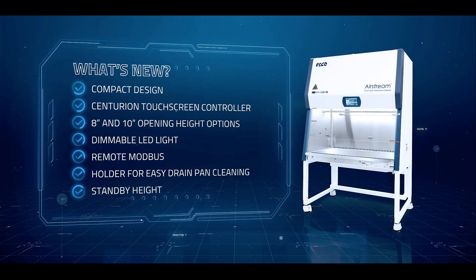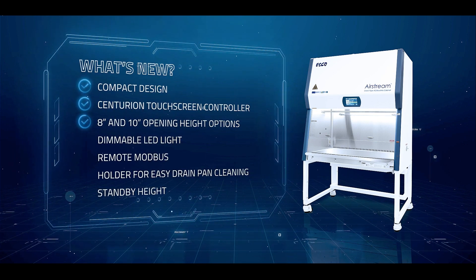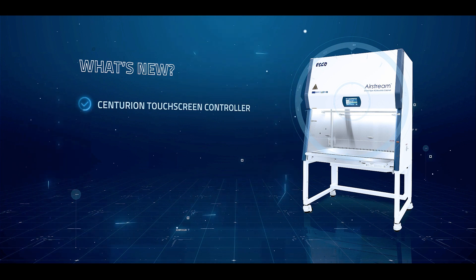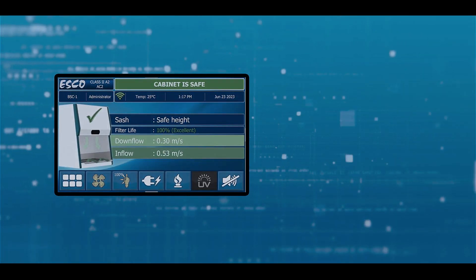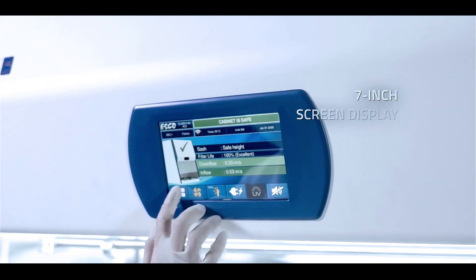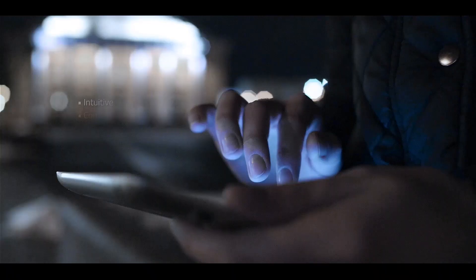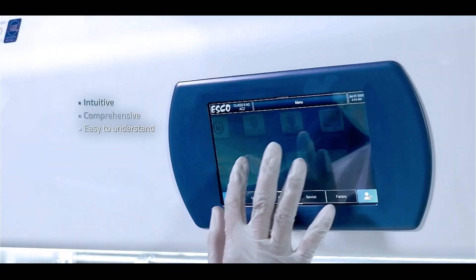Boasting its compact dimension allowing easier installation in smaller laboratory spaces. Enhanced with the new ESCO Centurion Touchscreen Controller, featuring a 7-inch screen with touch functionality suitable for gloved users, intricately crafted with smartphone-like intelligence and cutting-edge technology.